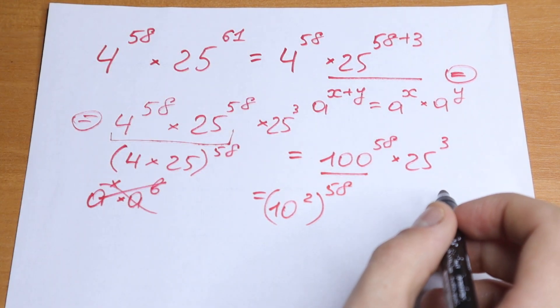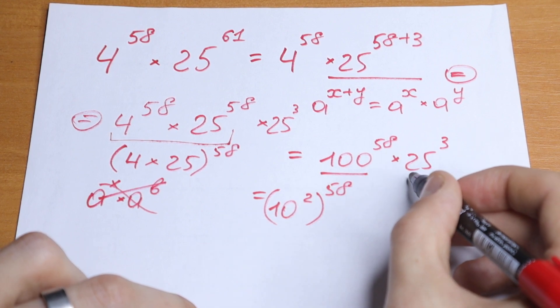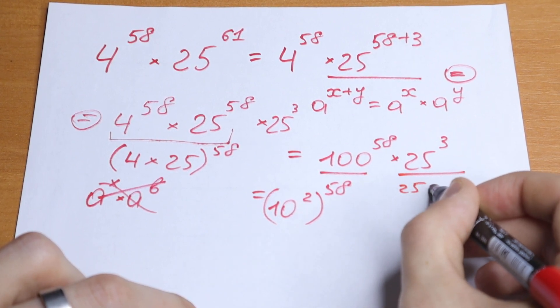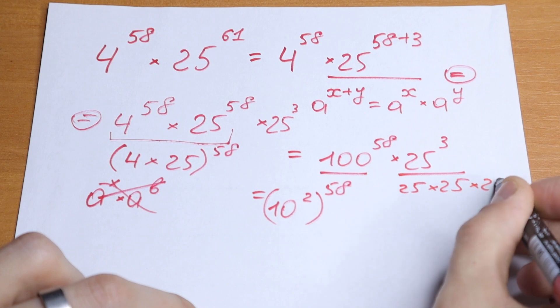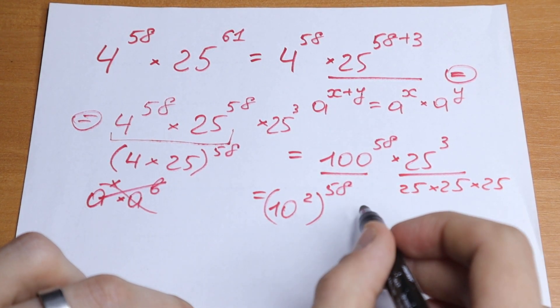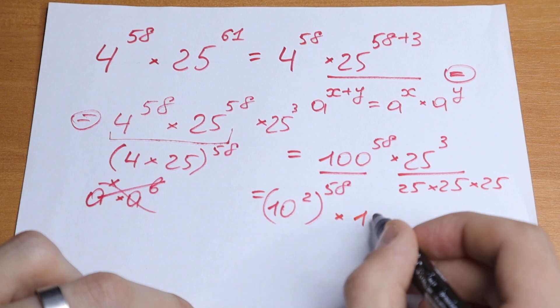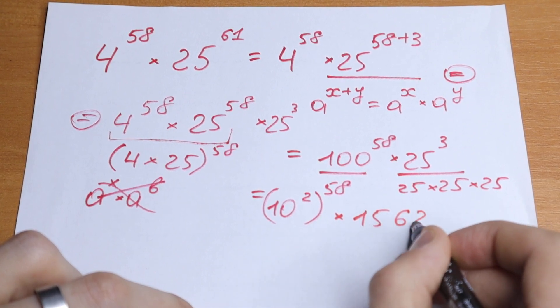We simplify this, and let's simplify 25 cubed. If we multiply 25 by 25 by 25, we will have 15,625.